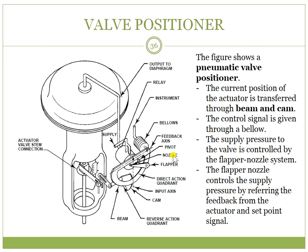The flapper-nozzle mechanism controls the supply pressure by referencing feedback from the actuator and the set point signal. The control will depend on the supply pressure determined by the flapper-nozzle.